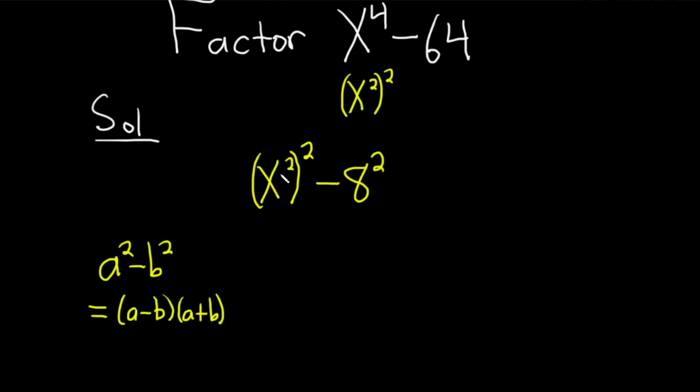So in our example, x squared is our a. This is going to be x squared minus 8 times x squared plus 8. And you can actually keep going, so let's go ahead and do that.